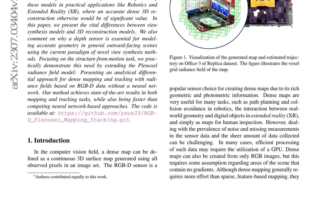A more recent RGBD SLAM paper, BAD SLAM, creates a dense map based on surfels instead of individual pixels. The surfels' position, orientation, and size are optimized with a clever bundle adjustment implementation.